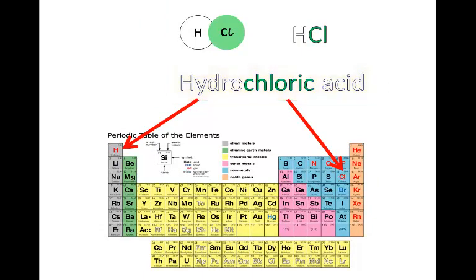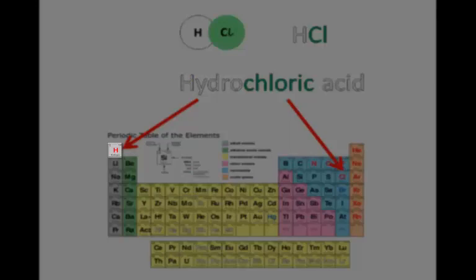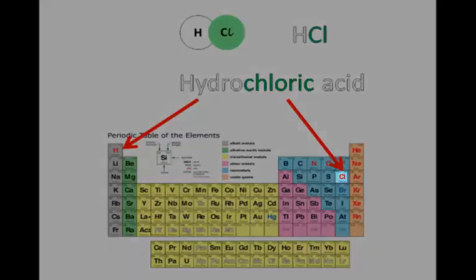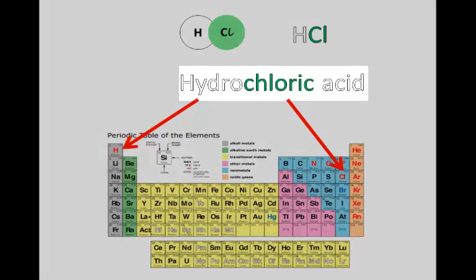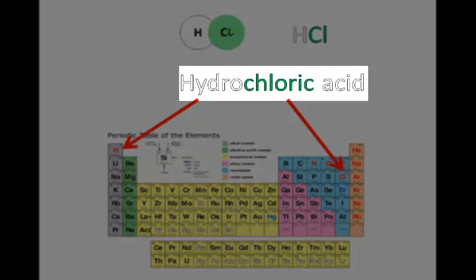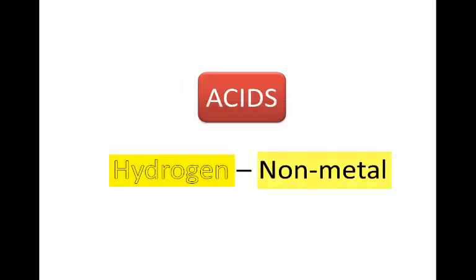But it's quite easy to remember because the hydro tells you about the hydrogen in it. Cloric tells you about the chlorine in it. Hydrochloric acid. We know it's an acid because it has hydrogen and a non-metal.